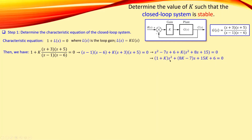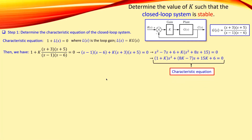In the final form, we have s squared with its own coefficient, s with its own coefficient, and the constant term. This is a second-order polynomial — our characteristic equation that we will now use in the following step. The next step is to generate the Routh table for our stability analysis.